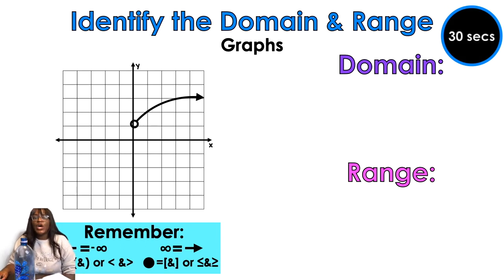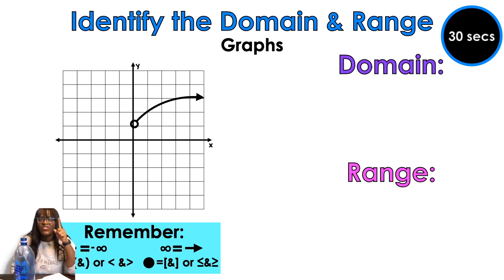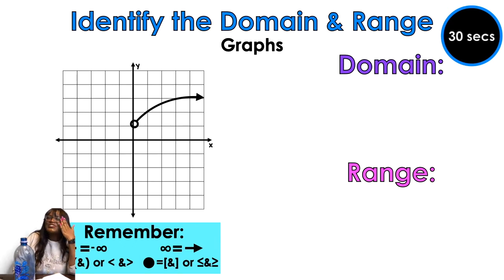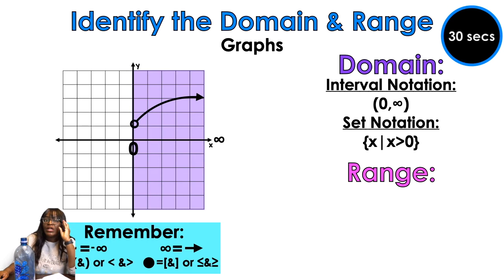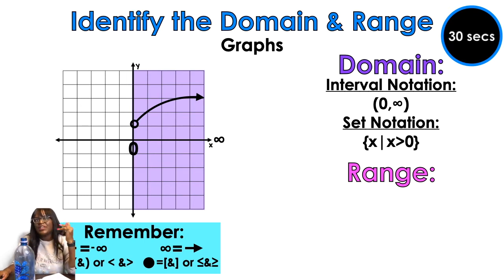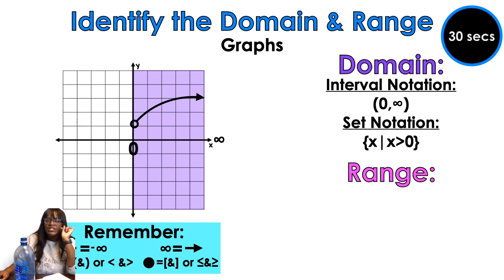Okay so we have our domain — let's look at this graph. This graph is almost exactly the same. What's the difference between this graph and the last graph? The open circle — that's right! So the open circle is the difference. That means that value is not included. I'm going from zero to infinity, however zero is not included, so I'm going to put a parenthesis on zero, and I'm going to say x is greater than zero — not greater than or equal to.